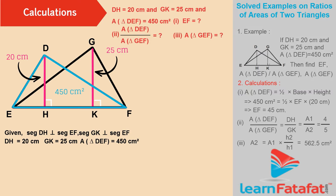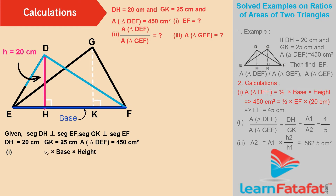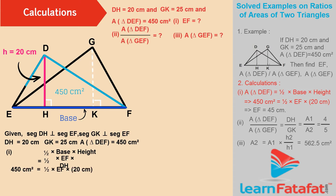Calculation for length of segment EF. Area of Triangle DEF is equal to half into base into height, which is equal to half into EF into DH. Putting in all the values, we get 450 cm² is equal to half into EF into 20 cm.